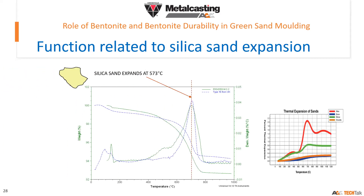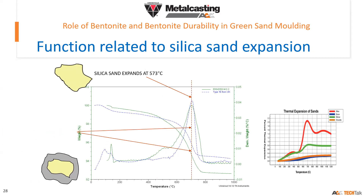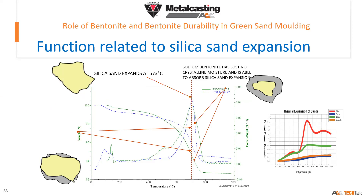Coming back to the function of bentonite linked to silica sand expansion: we have seen the TGA analysis of bentonite, and now we try to correlate TGA analysis of bentonite with silica sand expansion. Silica sand expands at 573°C. Normal calcium bentonite will burn and lose its mass quickly and not perform well in subsequent cycles. Whereas sodium bentonite, as we have seen, absorbs the silica sand expansion, and the related expansion defects like scab get controlled.